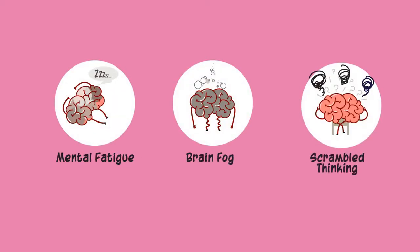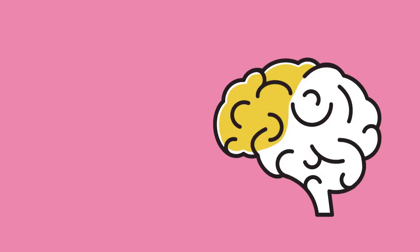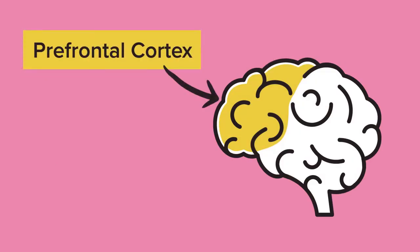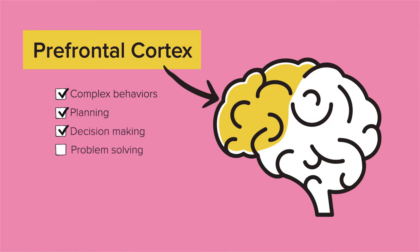The prefrontal cortex is the part of your brain located at the front of the frontal lobe. It is responsible for many important functions: complex behaviors, planning, decision-making, problem-solving, self-control, learning, and acting with long-term goals in mind.